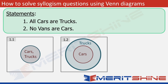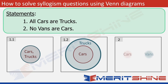Now look at statement 2: No vans are cars. This is a simple one — we know these are disjoint sets. So it will be drawn as two completely separate circles with no intersection. No cars are vans and no vans are cars — there is absolutely no overlap.